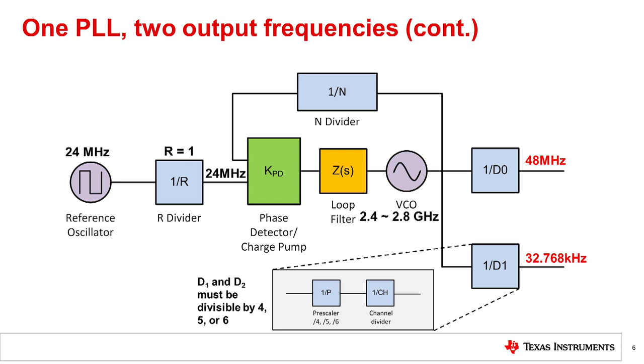One possible solution is VCO frequency of 2.4 GHz, output divider D0 set to 50, output divider D1 set to 73,242. Output 0 has no frequency error and output 1 has a 2.56 ppm frequency error.